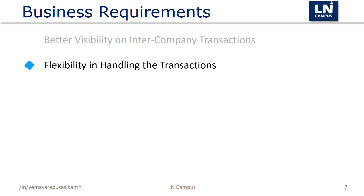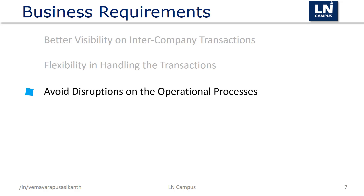A key requirement is also to avoid disruptions in operational processes. In earlier versions, the shipment process would be put on hold if the commercial price was not defined or was missing. Imagine a user getting an alert early in the business process so they can take action and avoid the disruption at the shipment stage. In the new intercompany trade solution, it is possible to view and modify pricing details early in the business process and correct them if required.